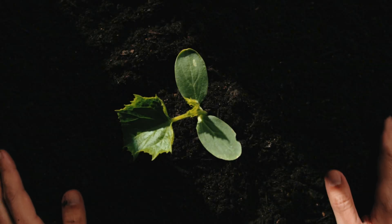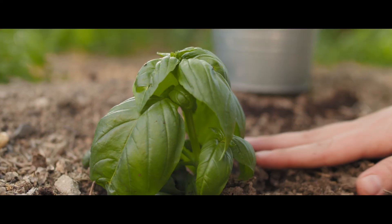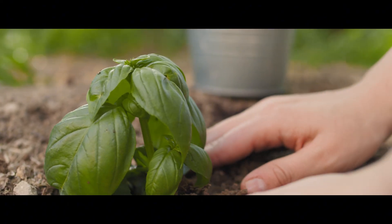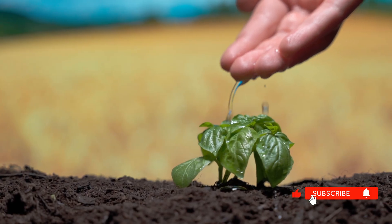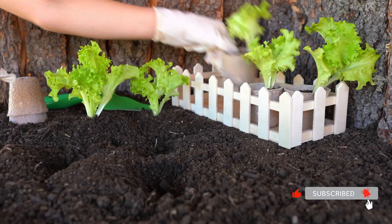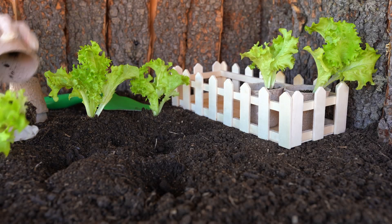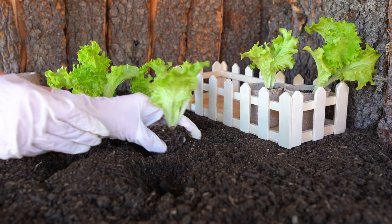Use both hands intentionally. Plant with one, smooth soil with the other. After two weeks, add one vegetable. Tomatoes or lettuce. Beginner-friendly. High success rates.